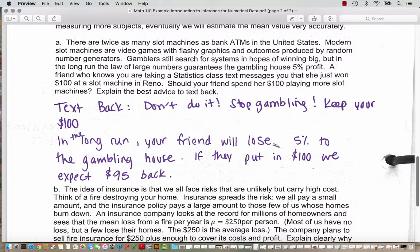Explain the best advice to text back. So here's what I would text back. Don't do it. Stop gambling. Keep your $100. So in the long run, your friend will lose 5% to the gambling house because the gambling house takes 5% for profit. So if your friend puts in $100, we expect just to get $95 back. So our friend is better off just keeping their $100.